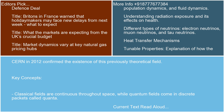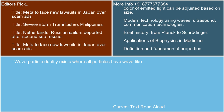Key Concepts: Classical fields are continuous throughout space, while quantum fields come in discrete packets called quanta. Wave-particle duality exists where all particles have wave-like properties.